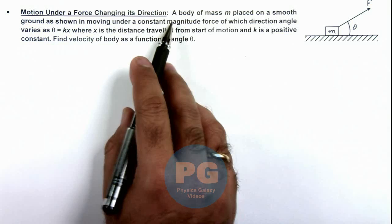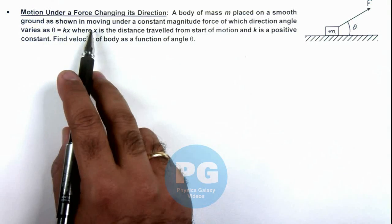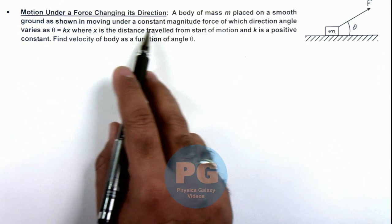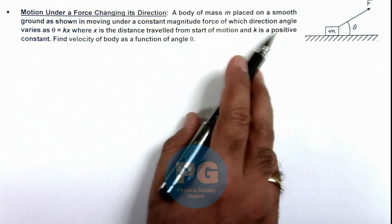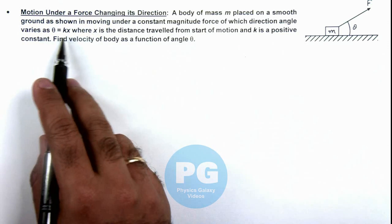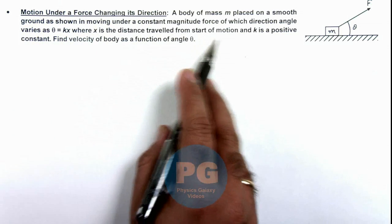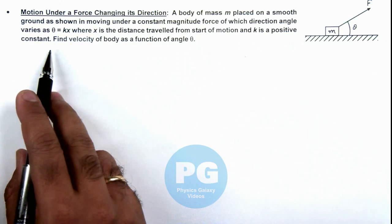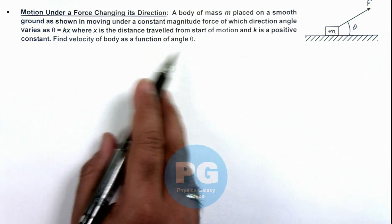Here the situation is given as a body of mass m placed on a smooth ground as shown, moving under a constant magnitude force of which direction angle varies as theta equals kx, where x is the distance travelled from start of motion and k is a positive constant. We are required to find the velocity of body as a function of angle theta.